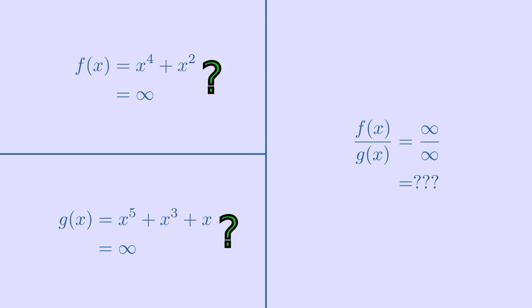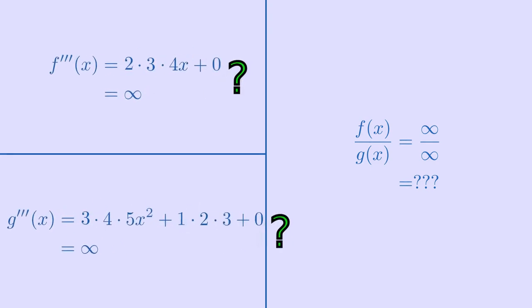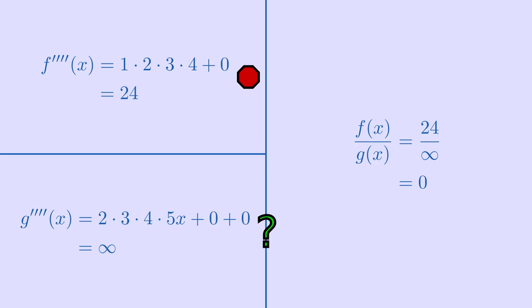Note that the same thing happens if we have polynomials with multiple terms. The lower order terms get ground down to a constant, then to zero, before the higher order terms come to play. The highest order term on either side is the only one that matters, and whichever side has the higher highest order term wins.